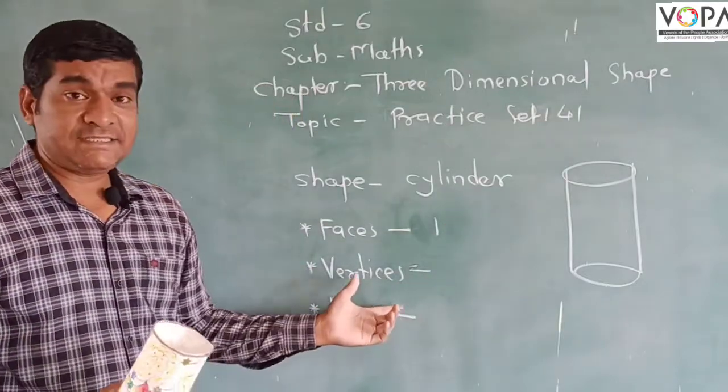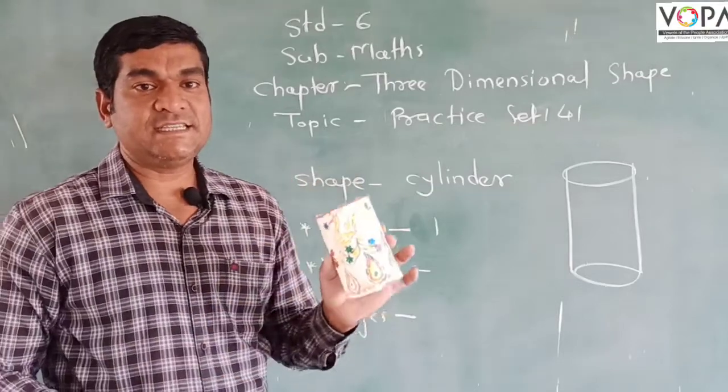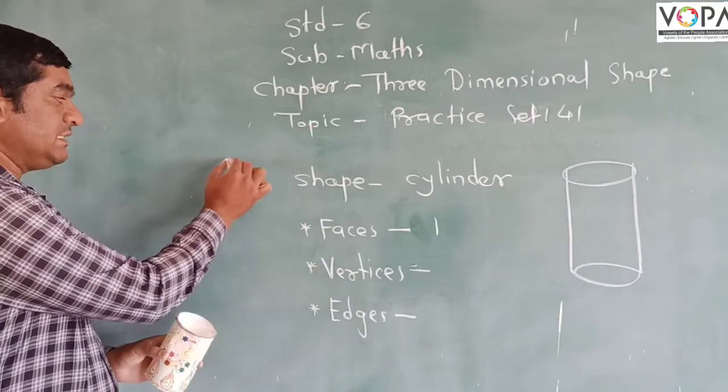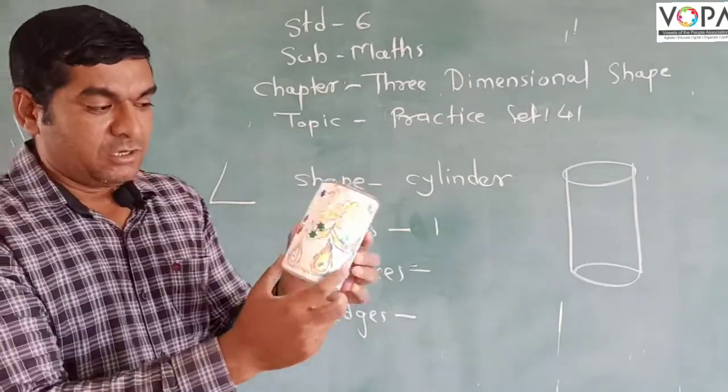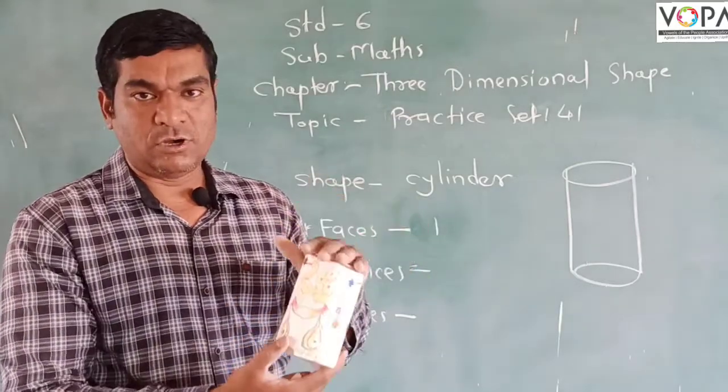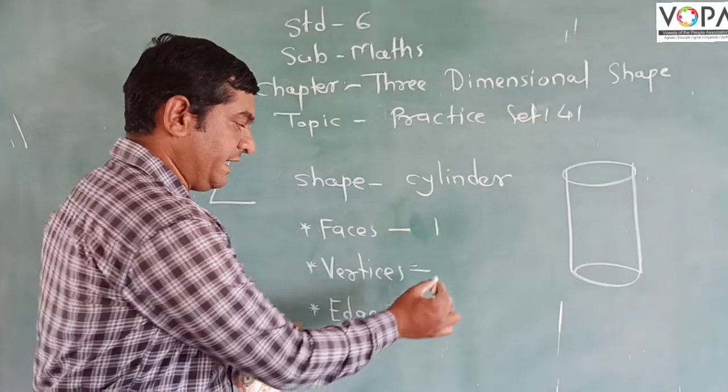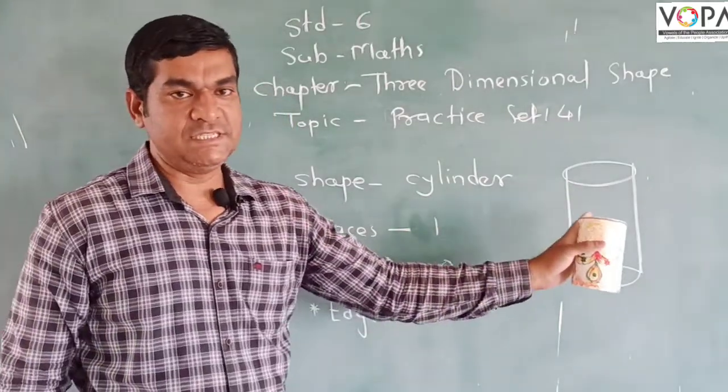Then the vertices. There is no single vertex in a cylinder, because in the last subtopic we learned that vertices means they make an angle. Here not a single angle is formed. So that is why in the cylinder there are no vertices - the number of vertices in the cylinder is 0.